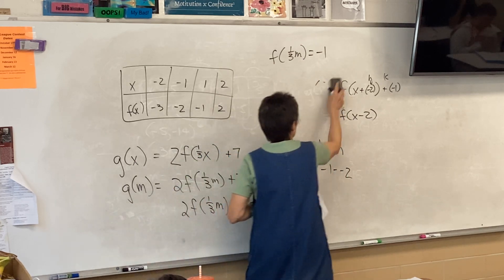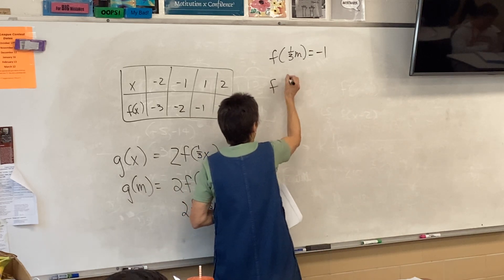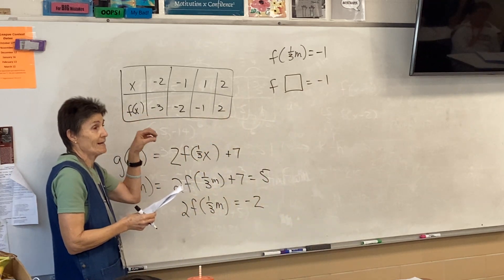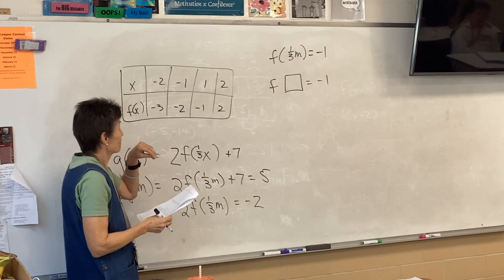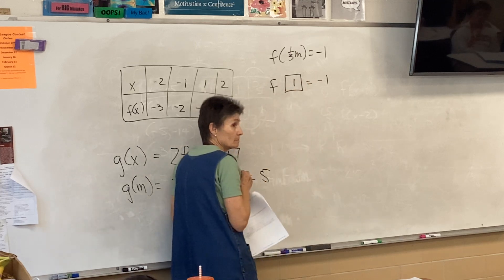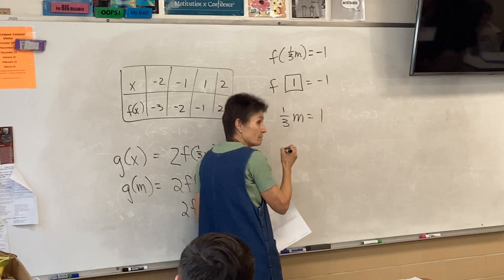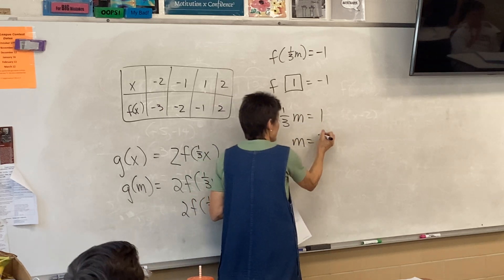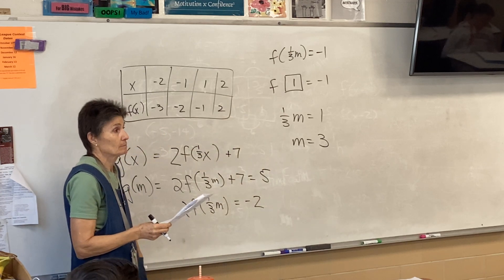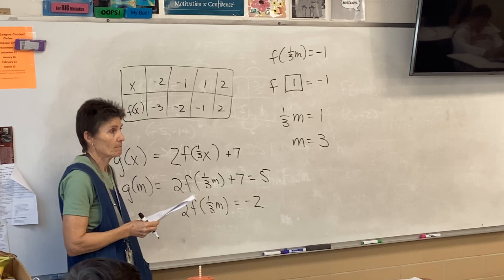So, that equals negative one. So, at this point, now I need to look at my chart. Because f of something is negative one. Well, in the chart, f of what is negative one? f of one. So, this has got to be one. Which means one-third of m has to be one. Which means m is three. All right? We've done that kind of thing before.